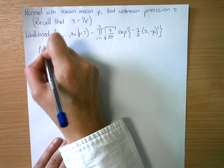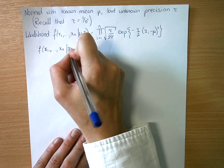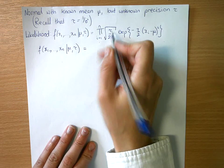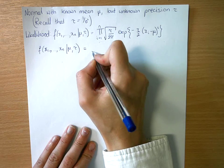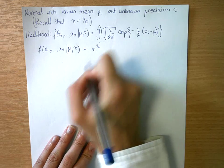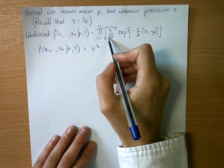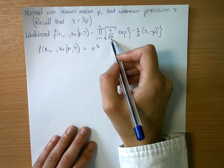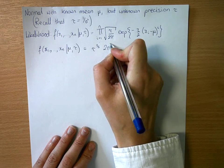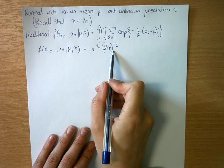So we would have our likelihood, f(x₁ to xₙ | μ, τ). We're going to say that's equal to, right, so tau is to the half in here, but it's n times, so n over 2 is raised to the power. Then we have 2π to the minus a half here, but it's n times, so 2π to the minus n over 2. And you can see this is constant with respect to tau, so we will be able to ignore this at some point.